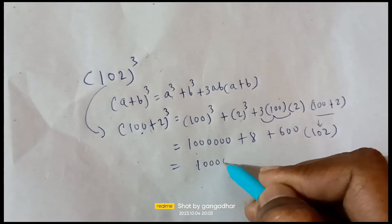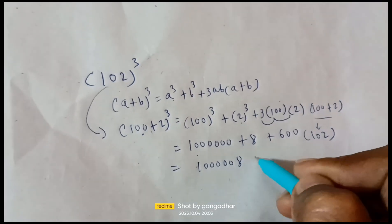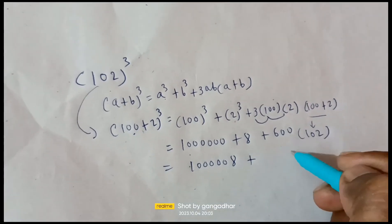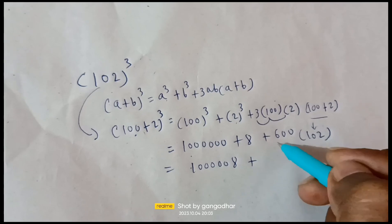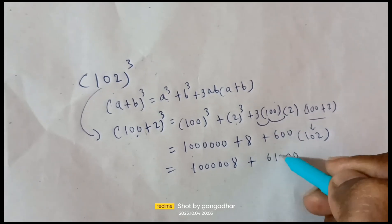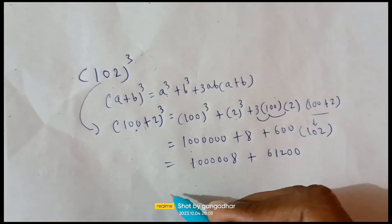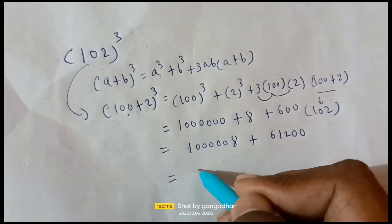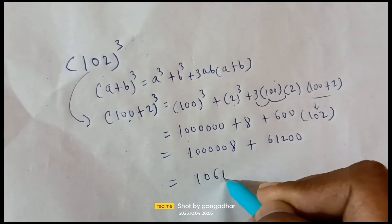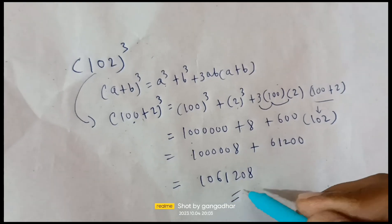That's 1000008 plus 600 times 102 equals 61200. So the final answer is 1061208. Thank you.